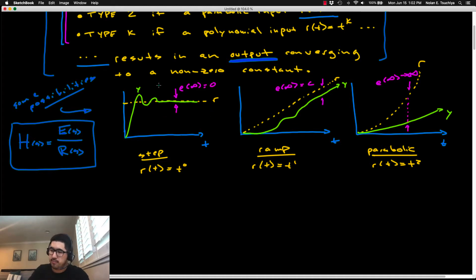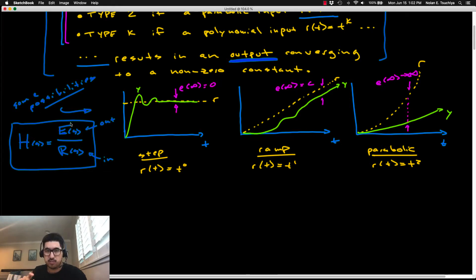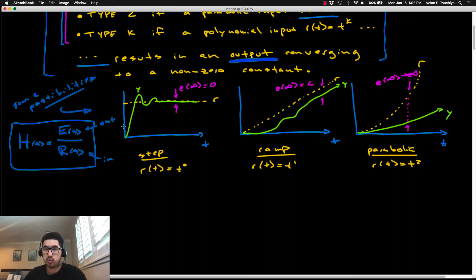In the first example, we have a step input as our reference — this is a horizontal line. The error, which is the numerator of H(s), is our output of the system. The output of the closed-loop system, the green line, is Y, and notice that Y converges on R.